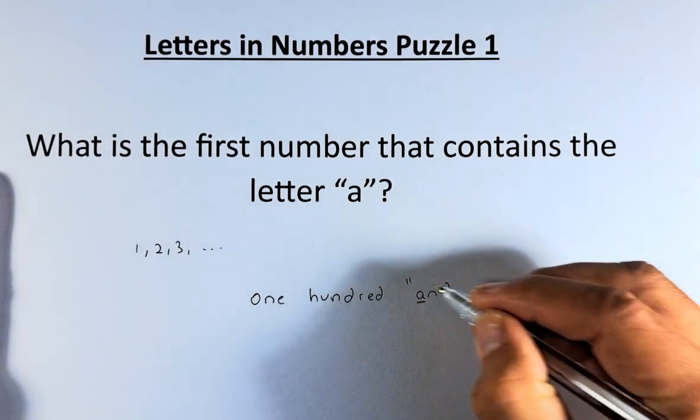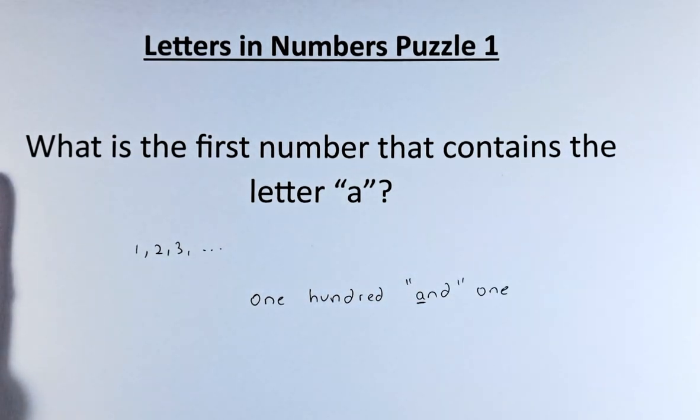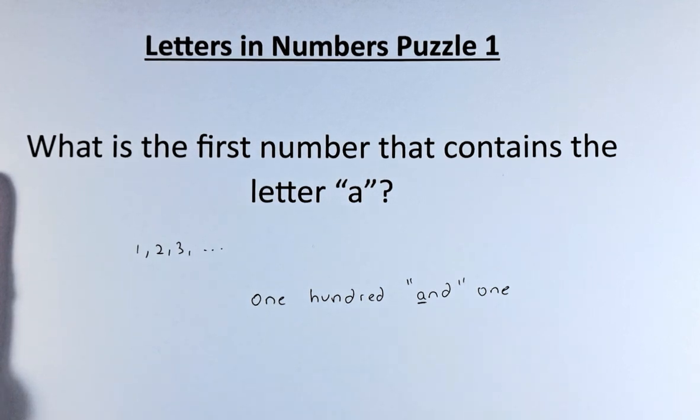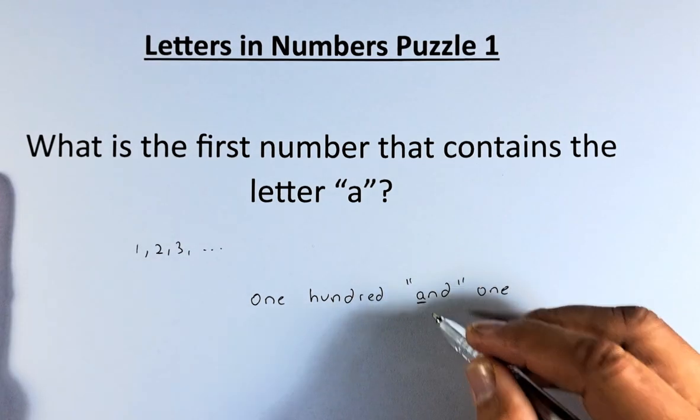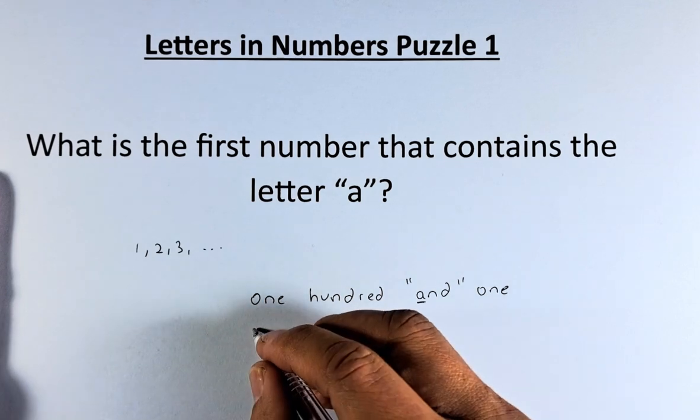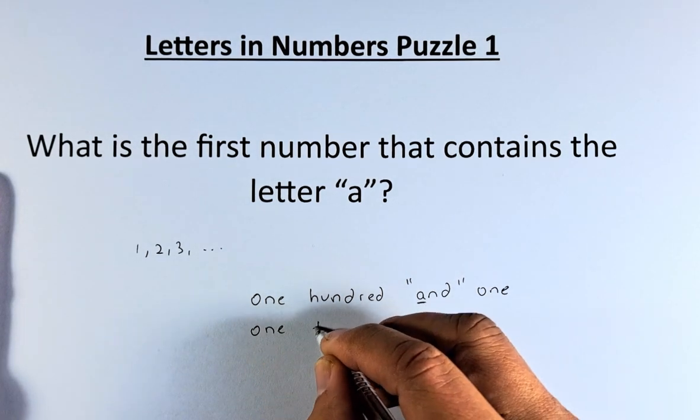If you do not use the conjunction 'and', in America for example, they say one hundred one, one hundred two, and so forth. If you ignore the word 'and', the first number that has the letter A is 1,000.